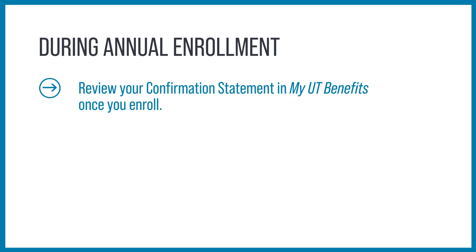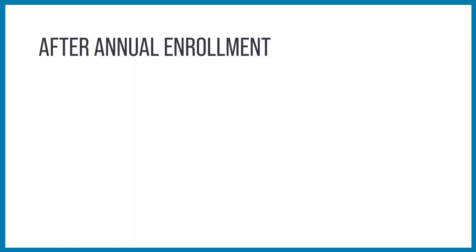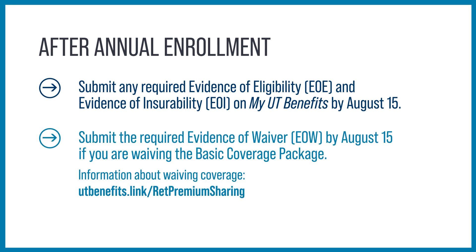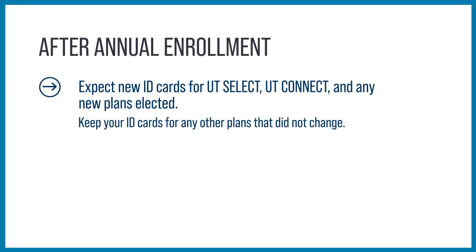Review your confirmation statement within My UT Benefits once you enroll and save or print a copy for your records. The annual enrollment election window closes at 11:59 p.m. on July 31st. Be sure to submit any required evidence of eligibility and evidence of insurability on My UT Benefits by August 15th. If you don't upload the appropriate documentation by this date, your related benefit changes will not take place. Submit the required evidence of waiver by August 15th if you are waiving the basic coverage package. Expect new ID cards for UT Select, UT Connect, and any new plans elected. Keep your ID cards for any other plans that did not change.